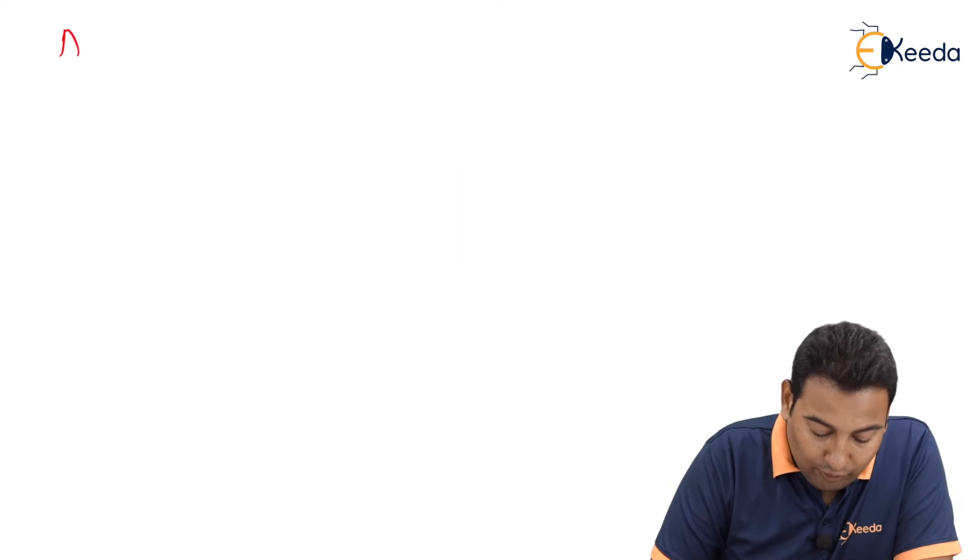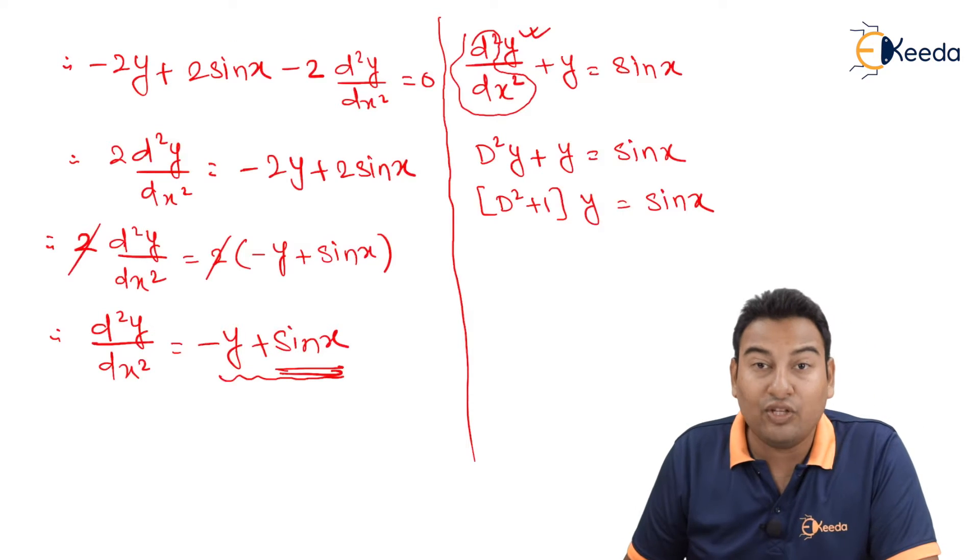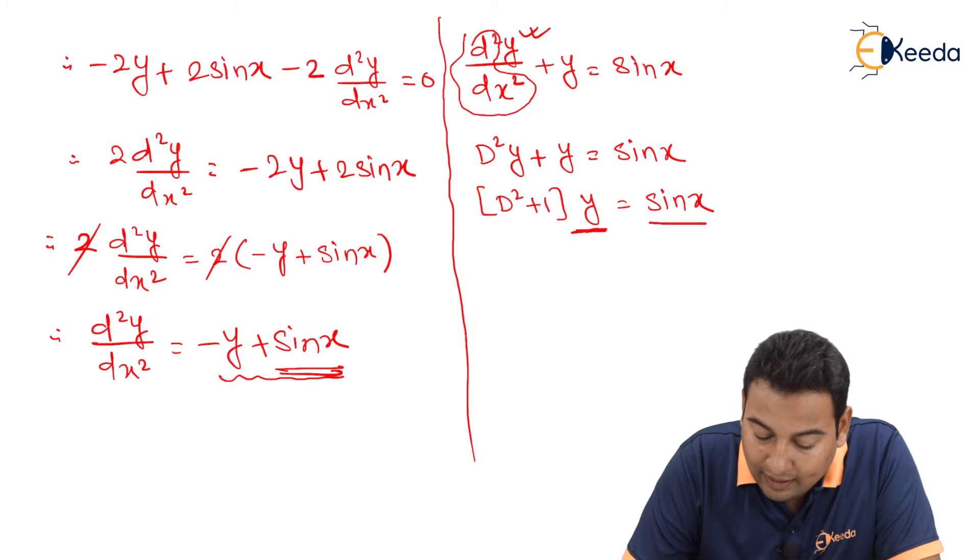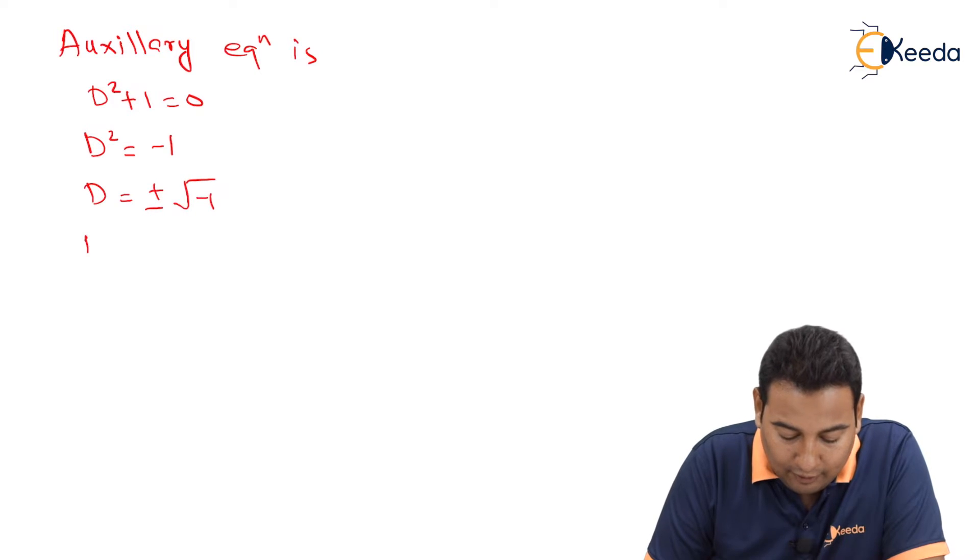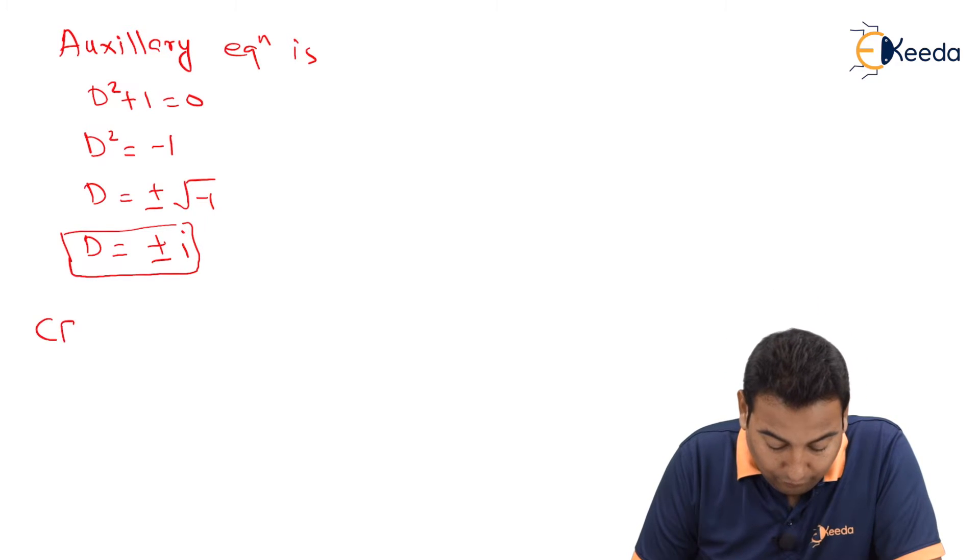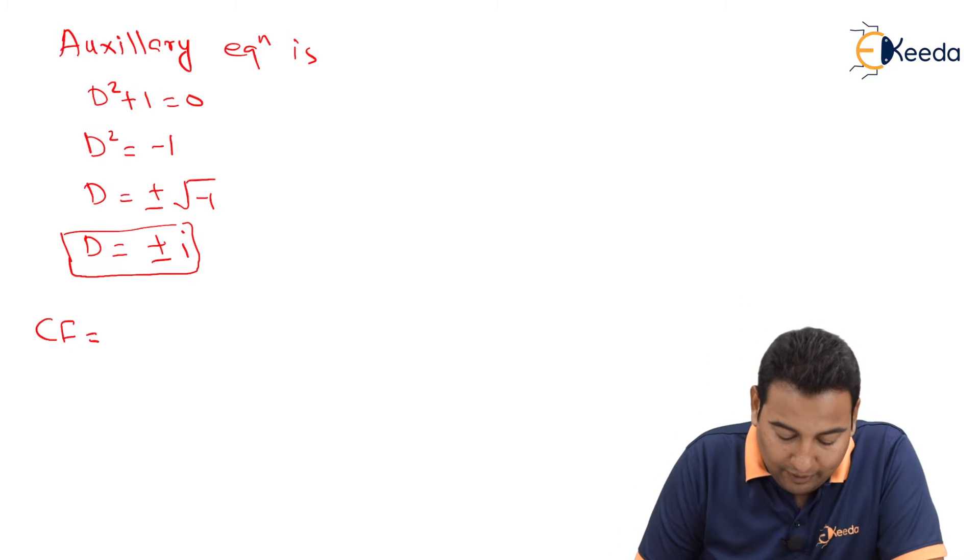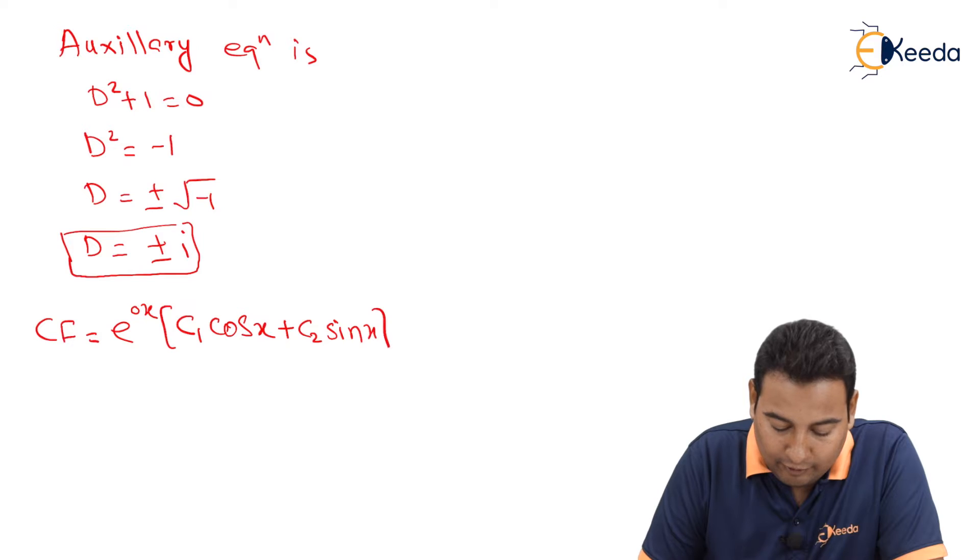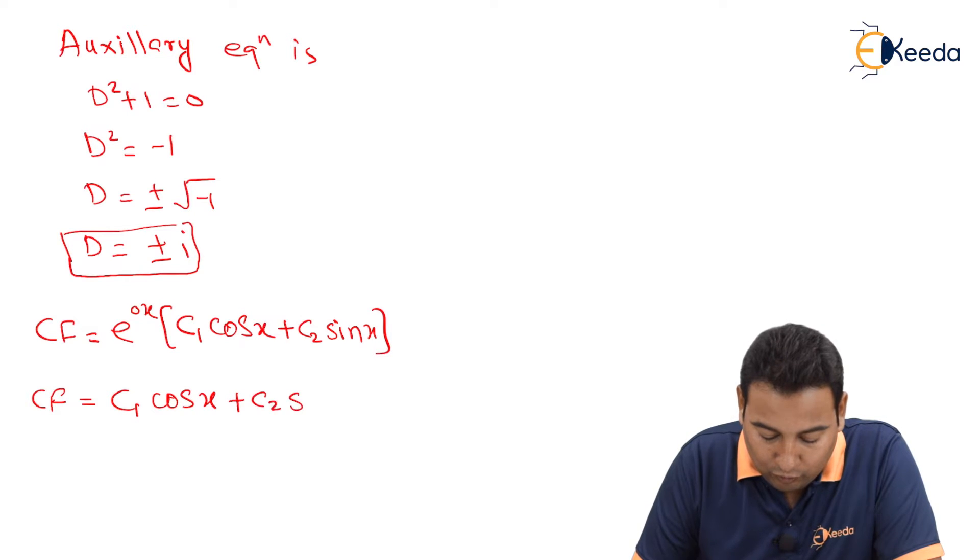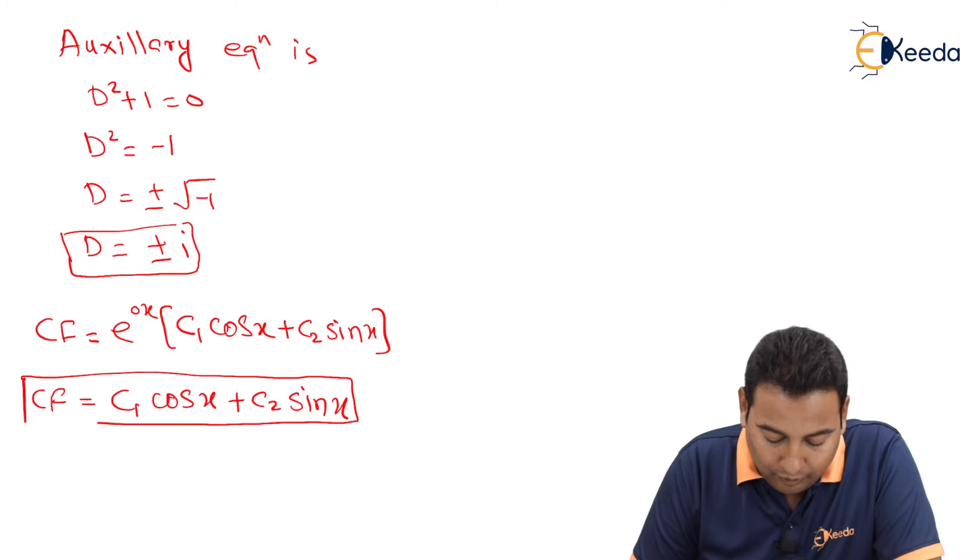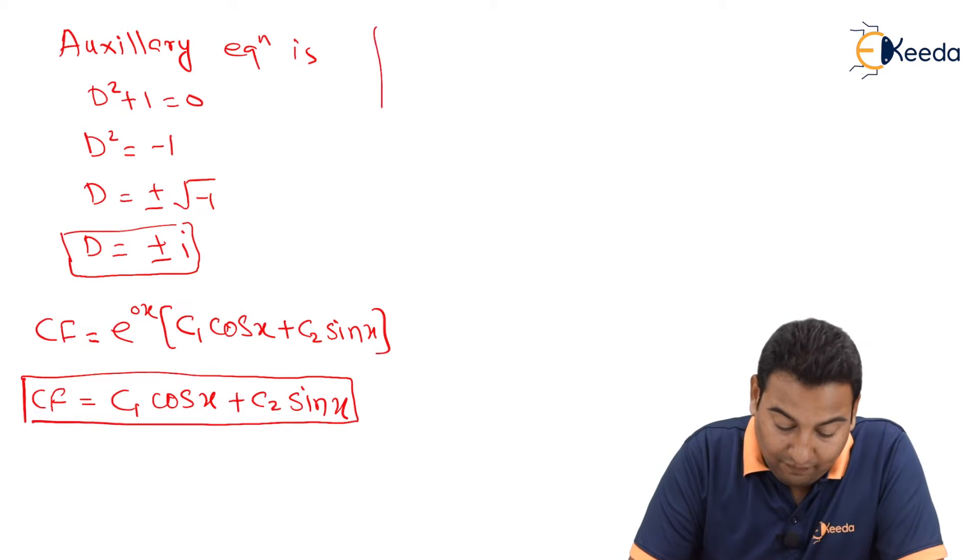For finding CF, we want auxiliary equation. For writing down the auxiliary equation, as discussed, we don't consider this y as well as sin x. We are left with D² plus 1. And this is the same that we got in the last problem. D² is minus 1. Plus minus root of minus 1. Plus minus i. These are the roots of D. Therefore, CF will be, it is a complex root, it will be e^(0x) C1 cos x plus C2 sin x. e^(0x) we know is 1. C1 cos x plus C2 sin x is the required solution. That is CF.